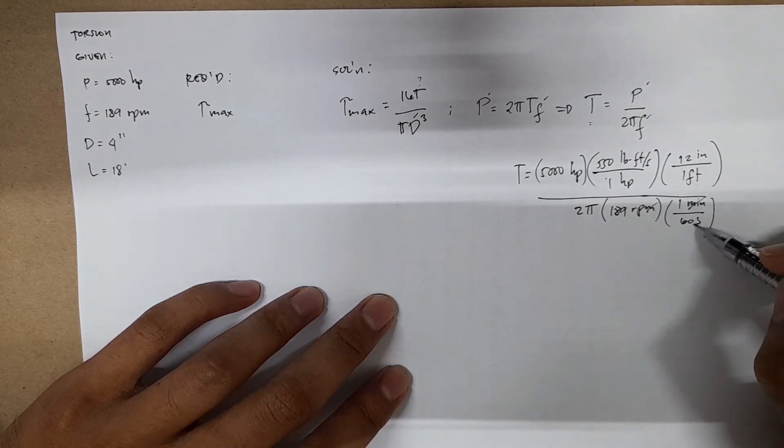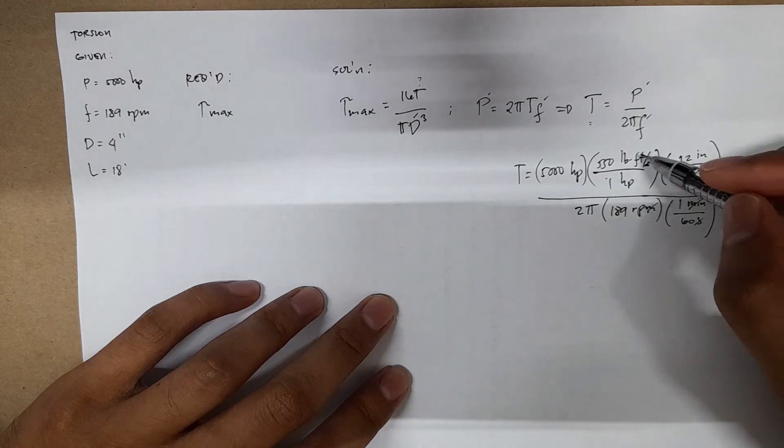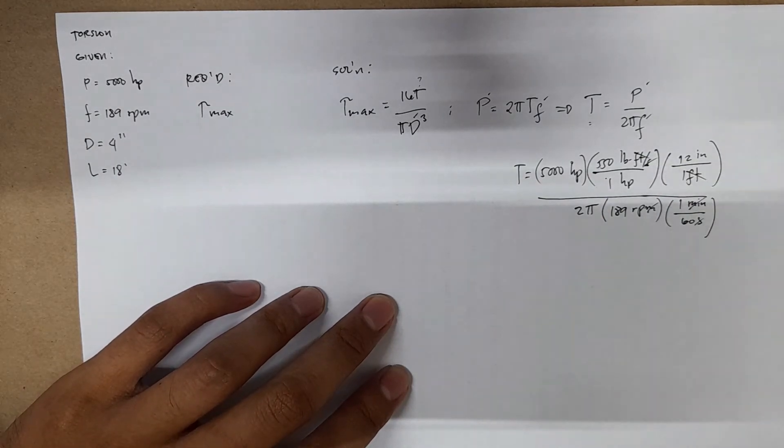This cancels out, this one cancels out, so this one cancels out. You now have pound inch, or just pound inch. The unit for torque here is pound inch.